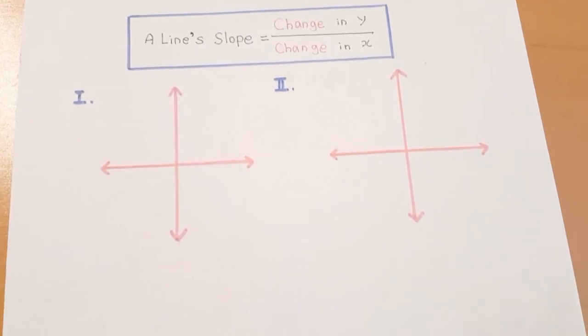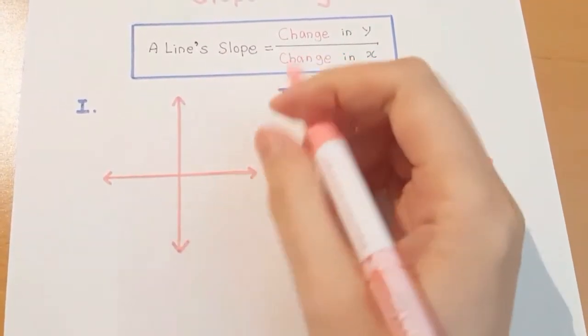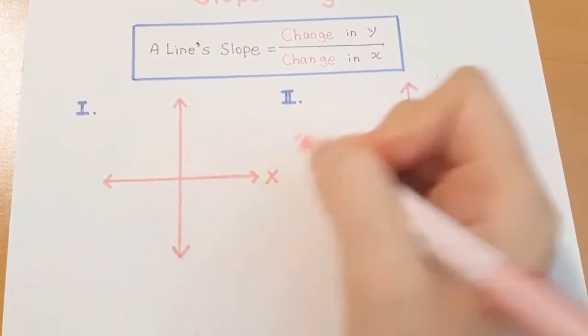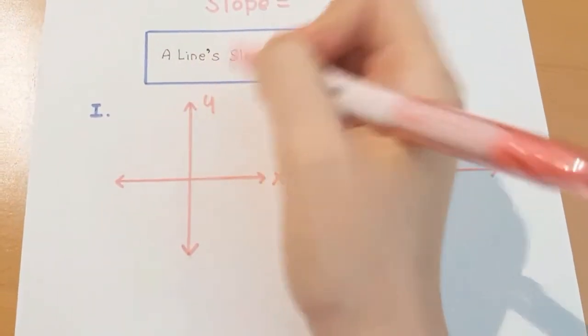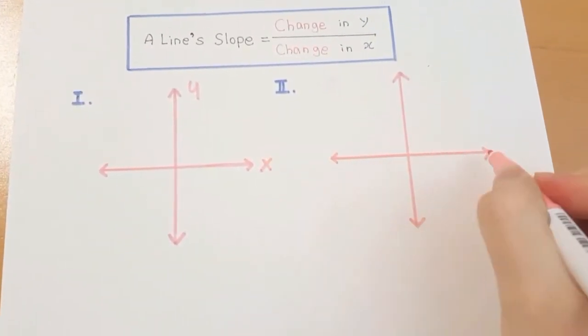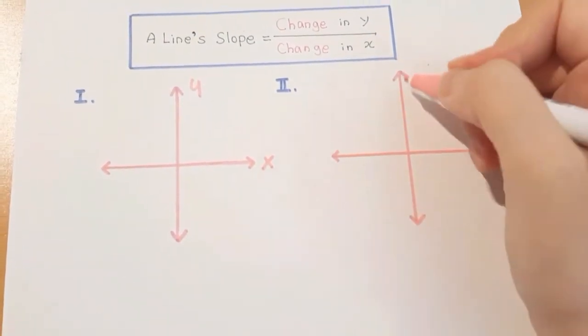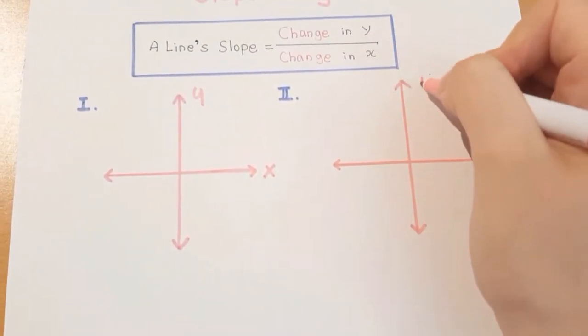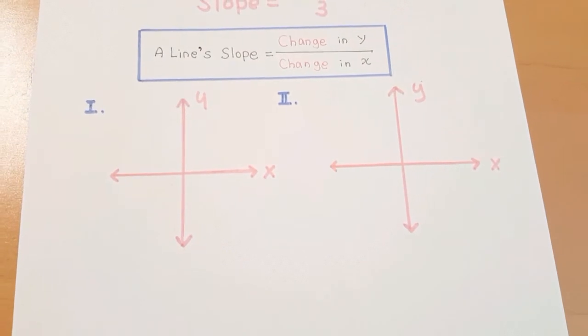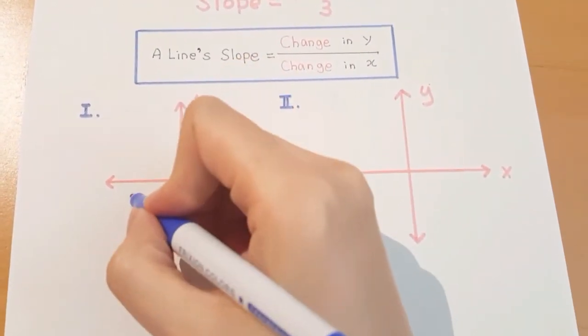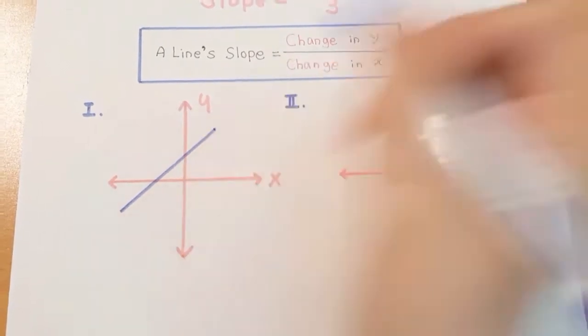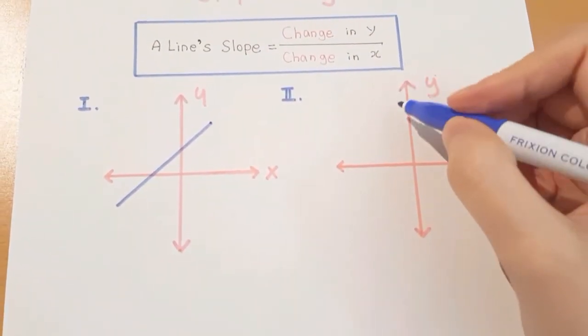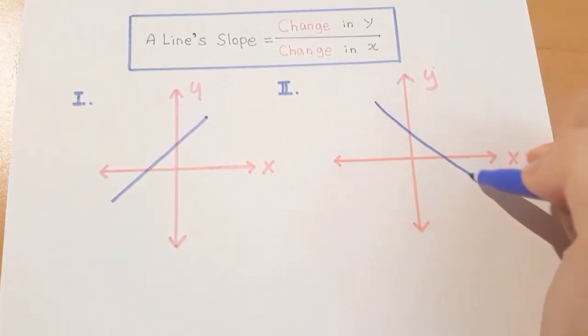Let's say this axis is X and this axis is Y. This axis is X, this axis is Y. And there is a line that's rising and there is a line that's falling.